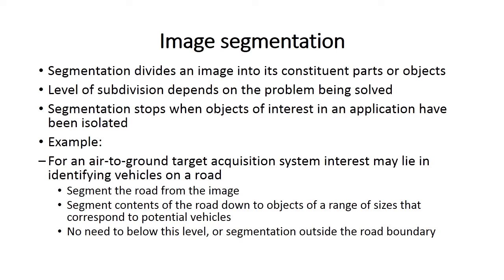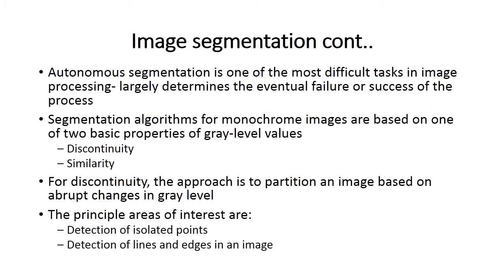Image segmentation divides an image into its constituent parts or objects. The level of subdivision depends on the problem being solved. Segmentation stops when objects of interest in an application have been isolated. For example, for an air-to-ground target acquisition system, the interest may lie in identifying vehicles on a road, which means segmenting the road from the image. Autonomous segmentation is one of the most difficult tasks in image processing and largely determines the eventual failure or success of the process.